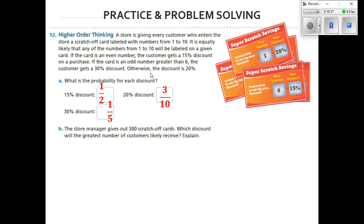The last one says otherwise the discount is 20%. Well, if it's going to be not even and not an odd number that's over 6, that's going to leave 1 through 6, and that's going to be 6 over 10. Oh wait, no, that won't be 6 over 10.